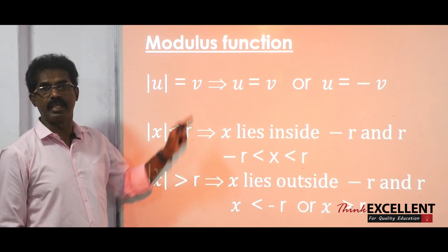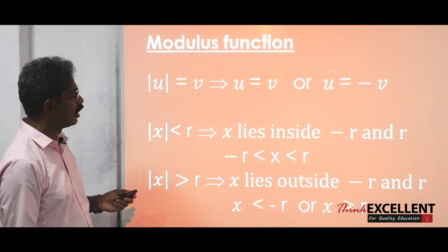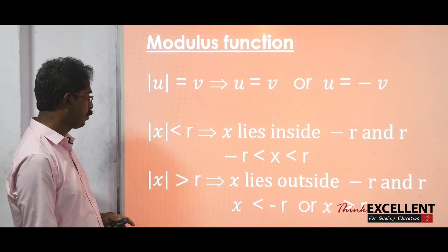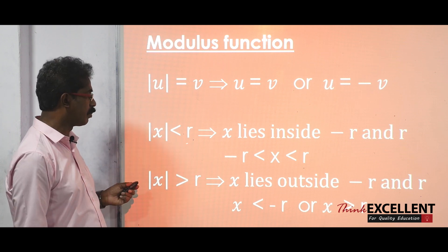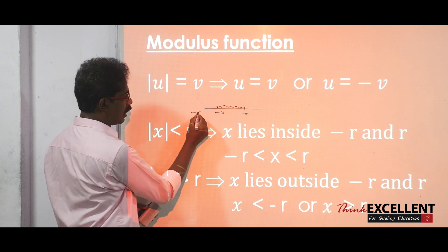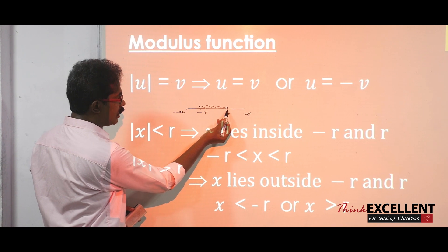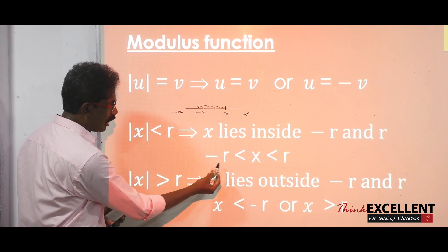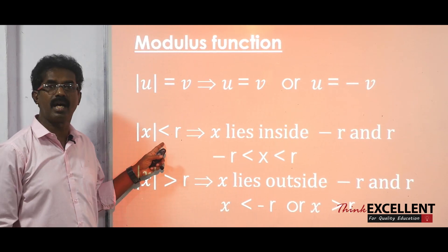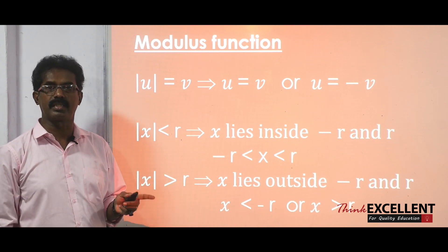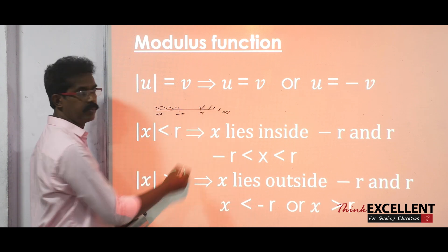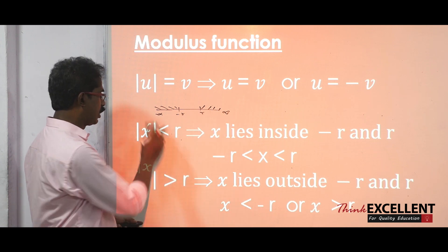Some important properties: if |u| = v, then u = v or u = −v. If |x| < r, it means x lies inside −r and +r, that is, x > −r and x < r. If |x| > r, we say x lies outside −r and +r, meaning x < −r or x > r.